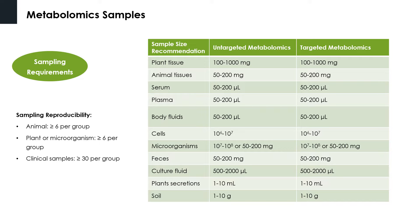Two factors commonly limit the high-throughput and full-range detection of metabolites. First, due to the wide dynamic range of metabolites, the concentration difference can be relatively large, reaching as high as 10 to the 7th power in magnitude. Furthermore, most metabolites are small molecules of complex structures in large quantities. For example, plants have secondary metabolites and the number of total metabolites exceeds 20 million. As a result, achieving high-throughput and full-range detection is challenging, hence it is important to select the most appropriate assay for metabolomic analysis according to sample type and research purpose.